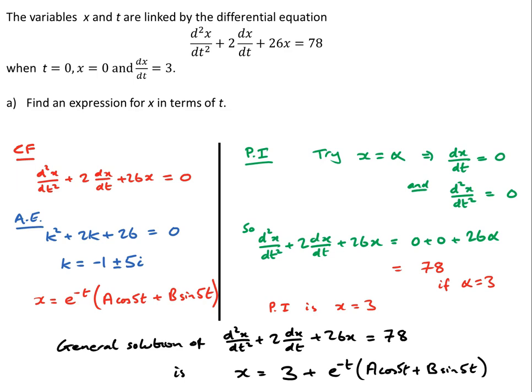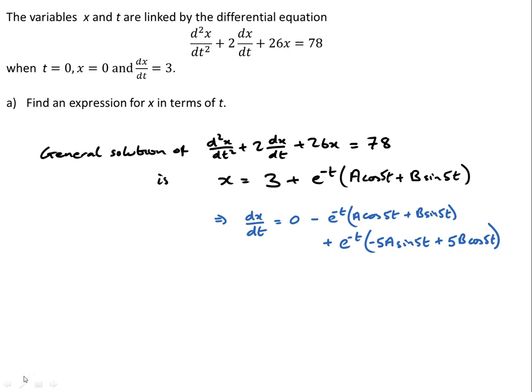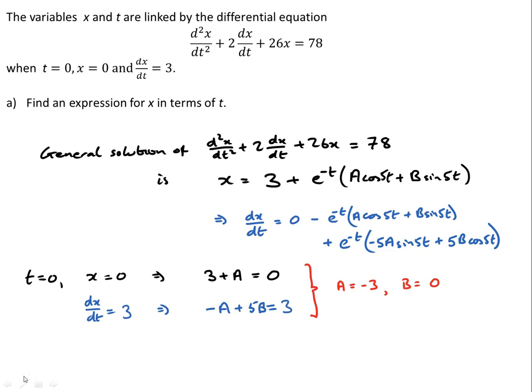Introducing the initial conditions: when t = 0, x = 0 gives 3 + a = 0, so a = -3. Using the product rule to differentiate, when t = 0, dx/dt = 3 gives -a + 5b = 3. Substituting a = -3 gives b = 0. So the solution satisfying the boundary conditions is x = 3 - 3e^(-t)·cos(5t).